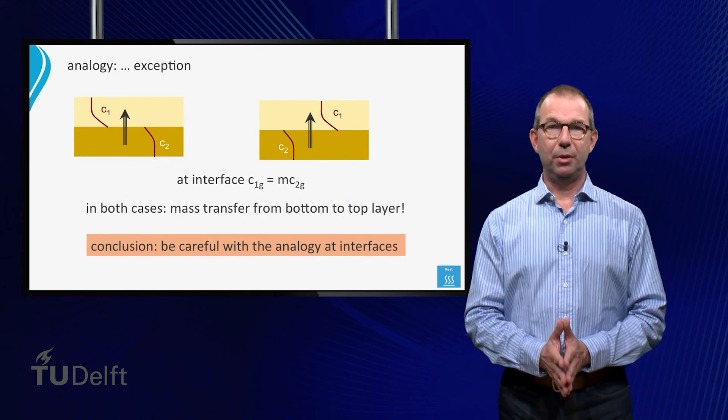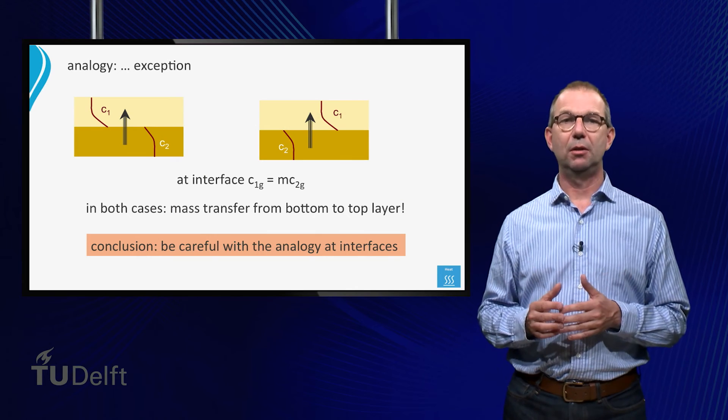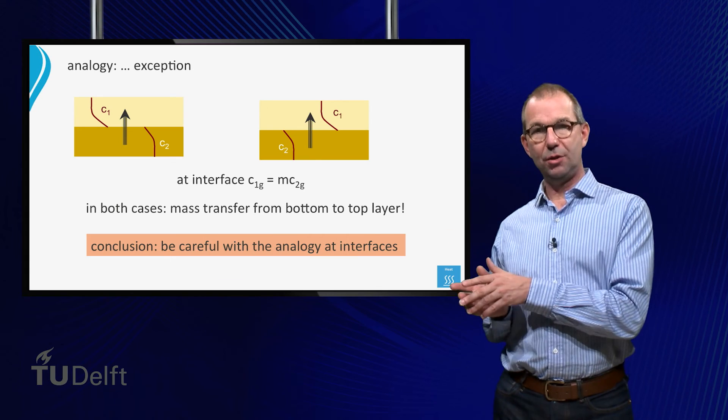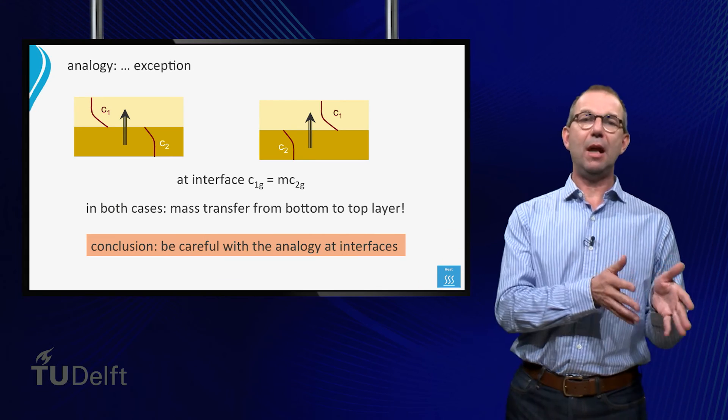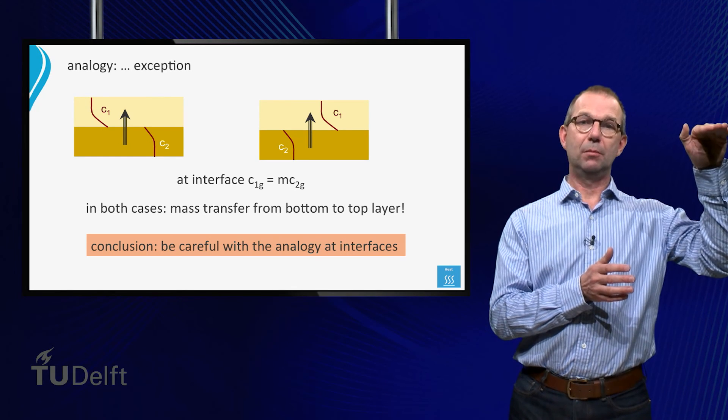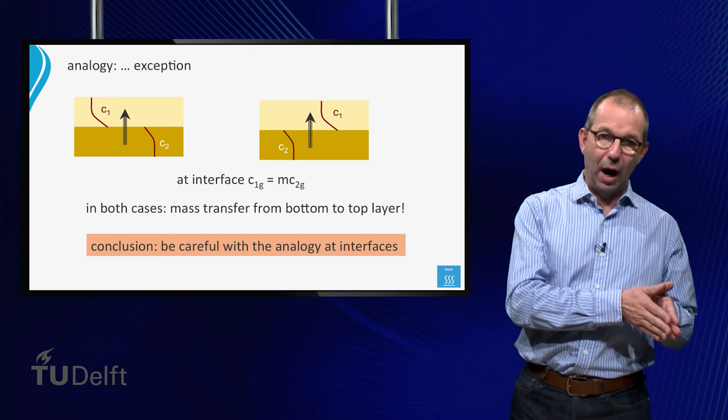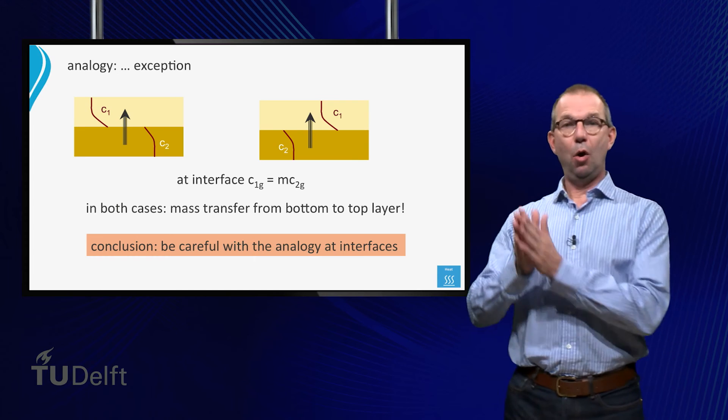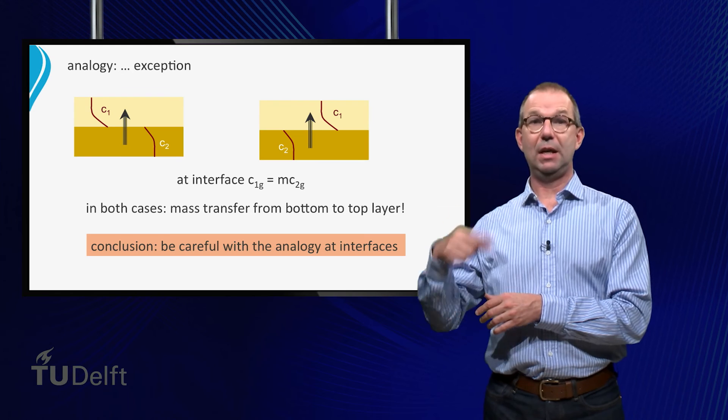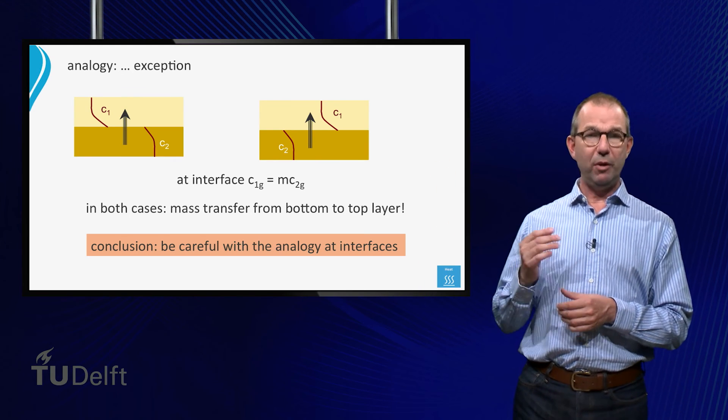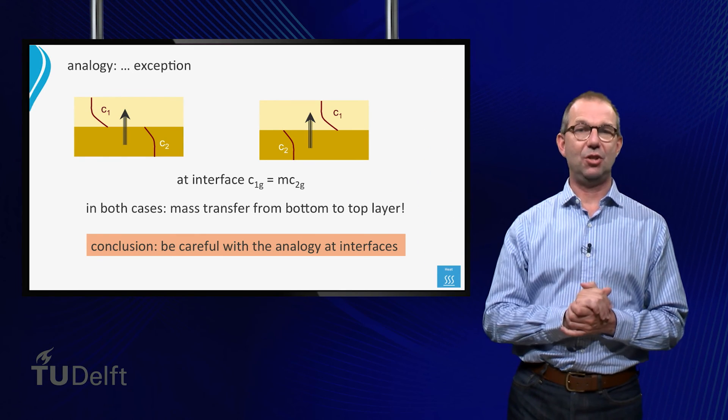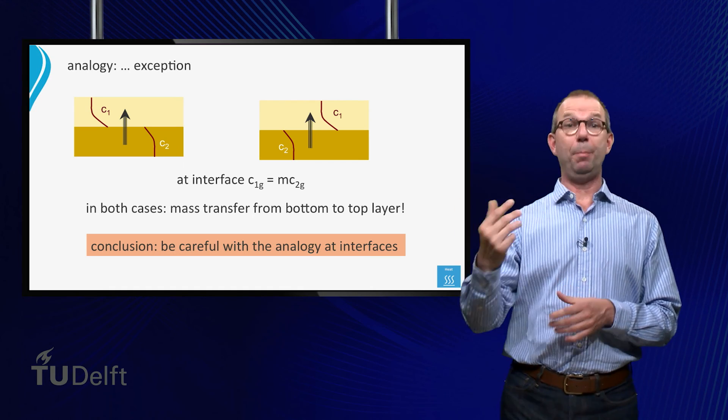Just to illustrate what can happen, consider now two layers on top of each other, with on the left component Y and on the right component X dissolved in these layers. In the left case, the concentration of the bottom layer is higher than in the top layer. We might expect a mass flow of Y from bottom to top. On the right, the concentration of X is lower in the bottom layer than at the top. So, if we are naive, we would expect, we would guess, a flow from the top to the bottom. But that doesn't have to be the case. It could be from the bottom to the top as shown in the picture.